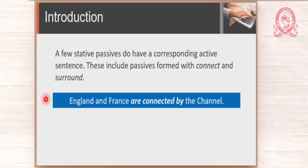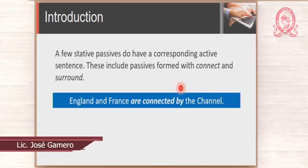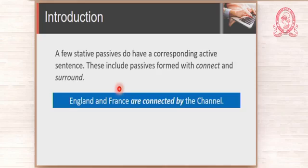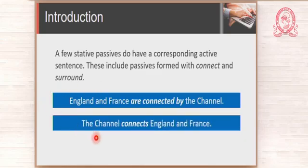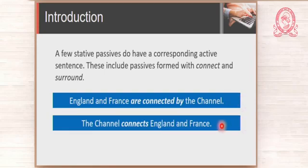Let us look at one example: 'England and France are connected by the channel.' Active or passive? That is easy — it is passive. Why? Because we have the verb 'be' and the past participle, and here we have the agent. England and France are not doing anything, so it is not active; the action falls upon the subject. Now let us see the corresponding active voice: 'The channel connects England and France.' You have a passive and you have an active. What kind of passive is it? It is a stative passive, and it has a corresponding active voice because you are using the verb 'connect.'